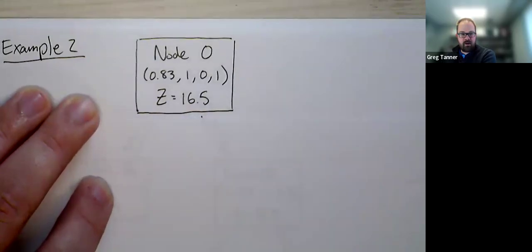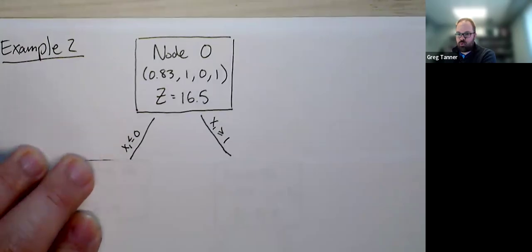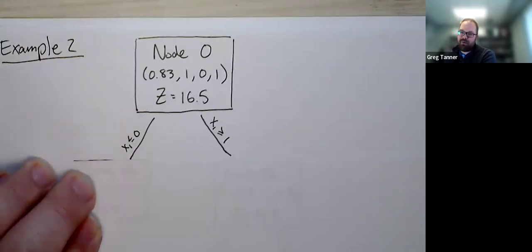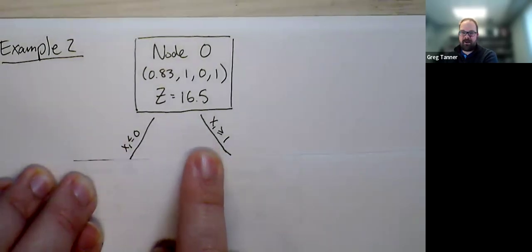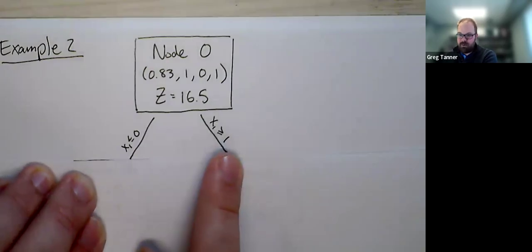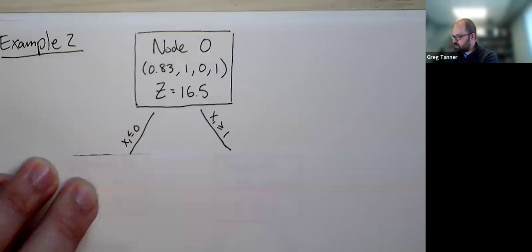We're then going to split on the non-integer variable, which is x1. And we're going to round down to zero, round up to one. Note that for binary variables, if we say less than or equal to zero, it forces x1 to be zero. And if we say x1 is greater than or equal to one, it forces x1 to be one. So that will give us then two nodes. We'll call those node 1a and node 1b.